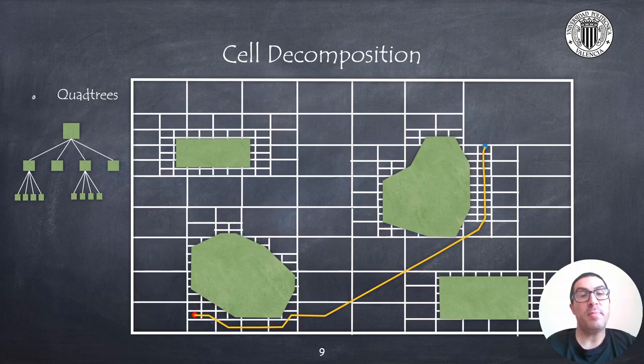The result of the previous examples is shown here, but with a quad-tree representation. As it can be seen, the number of cells used is much less because of the tree structure.